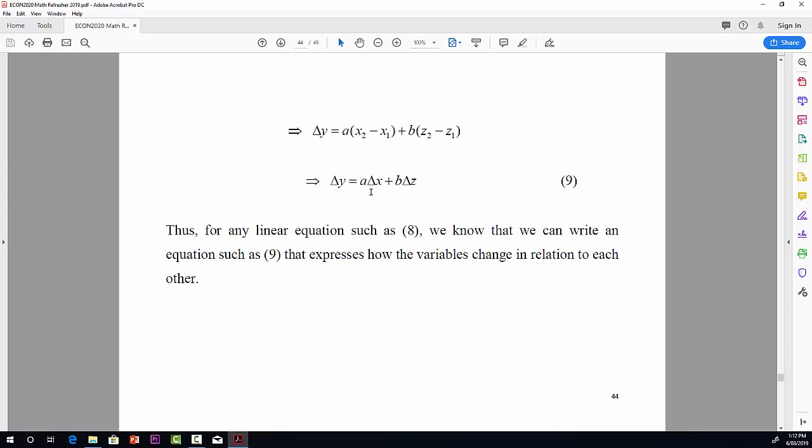So, one last point. I've done this for just two variables here, x and z, but this generalizes completely to as many variables as you want. So, you could have 20 variables on the right-hand side if you want, and if it's a linear equation like this, you can once again just jump to this second equation where you get the change in the variable on the left-hand side equal to the parameters times the change in the variables on the right-hand side.